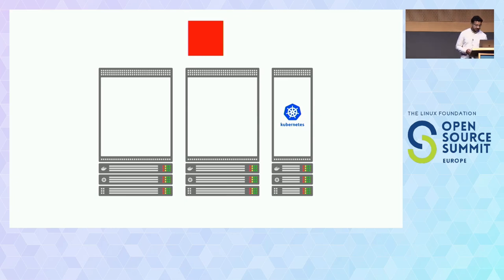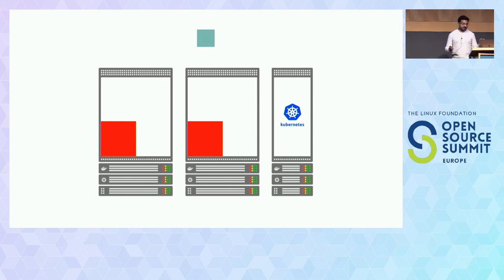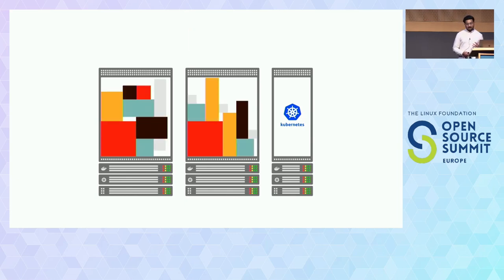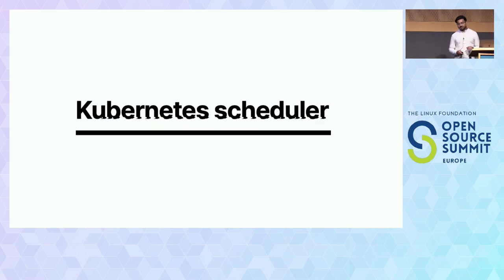There are some checks it does before it can decide where to place them. The first node on the left is empty, so it'll place a pod there. Then the second replica comes — it won't put it on the first node, because if you lose a node that could be problematic. Kubernetes keeps deciding where to put pods, playing Tetris with the containers. But how does it decide? This is where the Kubernetes scheduler comes in.